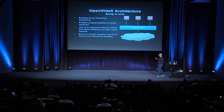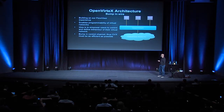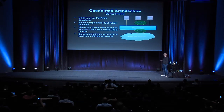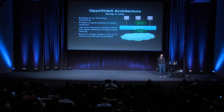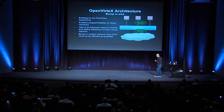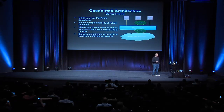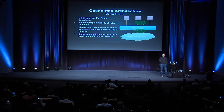So let's move on to the architecture of OVX. OVX sits in between the OpenFlow network and the network operating systems, and it speaks OpenFlow north and south — north to the controllers and south to the data plane. OVX has three main features that enable it to do its job: topology virtualization, address virtualization, and control function virtualization.